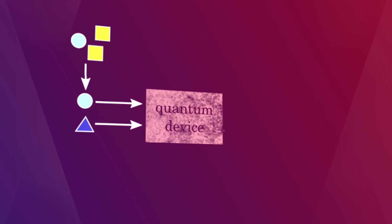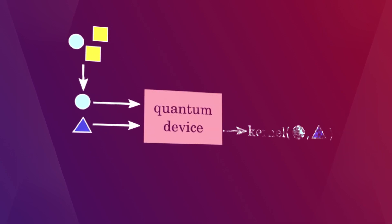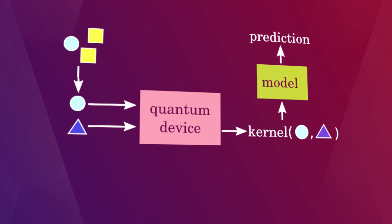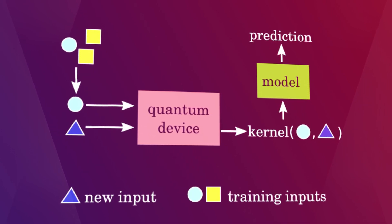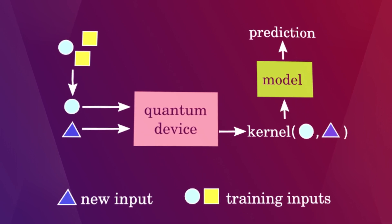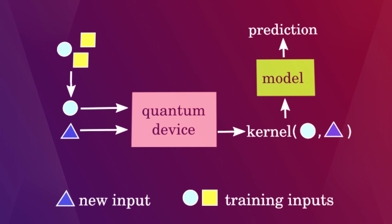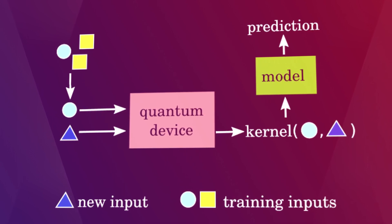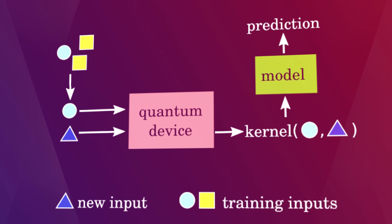Another idea is kernel evaluation. Kernel methods use machine learning models based on a distance measure between data points called a kernel. Quantum devices can be used to estimate certain kernels, including the ones hard to compute classically, by estimating the inner products of two high-dimensional quantum states.